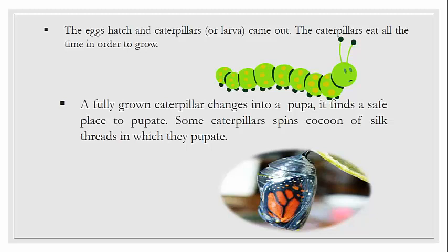Then a fully grown caterpillar changes into a pupa and finds a safe place to pupate. The pupa stage is the third stage of the butterfly's life cycle, and it is an inactive stage. In this stage the caterpillars stop feeding completely and become inactive. Some caterpillars spin a cocoon of silk threads in which they pupate, wrapping themselves in fine silky threads in a safe place.